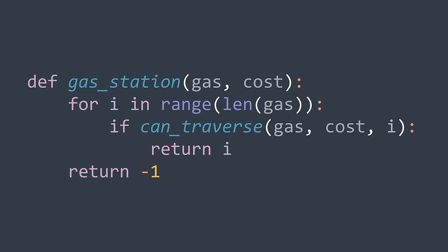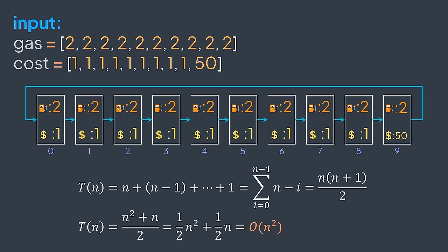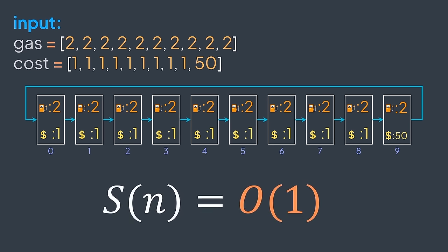For time complexity, in the worst case we get n + (n-1) + (n-2) + ... + 1, which after simplifying gives O(n²). Constant space complexity since we use no input-size-related variables. O(n²) is slow for this problem — we're getting it because for each station, we traverse almost all other stations. Let's see how to optimize.